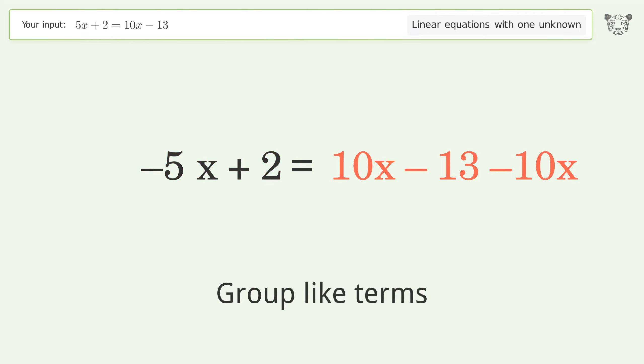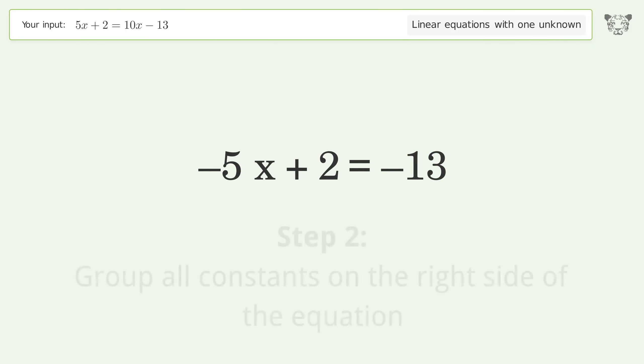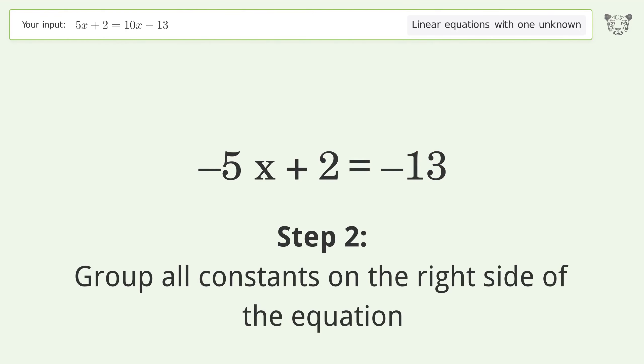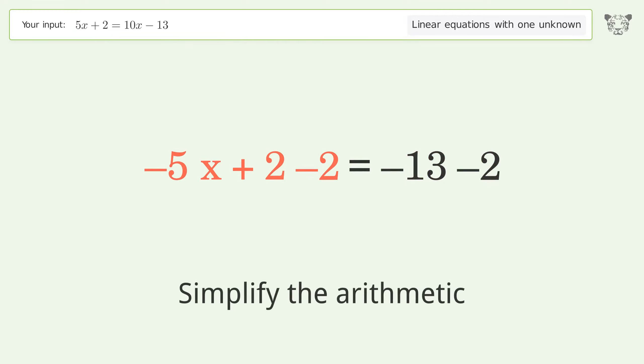Group like terms. Simplify the arithmetic. Group all constants on the right side of the equation. Subtract 2 from both sides. Simplify the arithmetic.